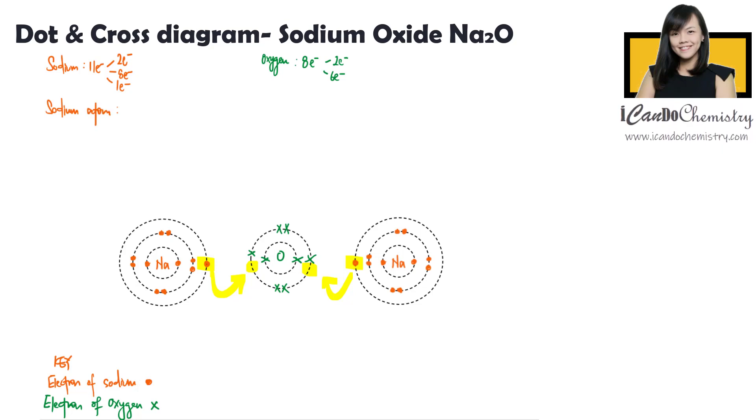Sodium atom has 11 protons, which gives it a charge of positive 11, while 11 electrons, which gives it a charge of negative 11. Hence, the overall charge of this atom is zero.